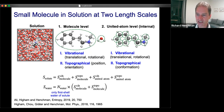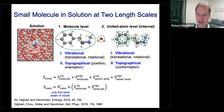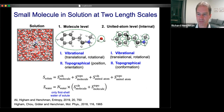We ignore vibrations inside a united atom corresponding to hydrogen atom motion because it's very high frequency and has almost no entropy at ambient temperature. So we can basically ignore the internal entropy of a united atom and simplify the system. Mathematically, the total entropy has molecule entropy — vibrational and topographical — plus united atom entropy — vibrational and topographical.